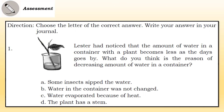Now I will be assessing your learning. Choose the letter of the correct answer. Number one: Lester noticed that the amount of water in the container with a plant becomes less as the days go by. What do you think is the reason for the decreasing amount of water? A) Some insects sift the water, B) Water in the container was not changed, C) Water evaporated because of heat, D) The plant has a stem.